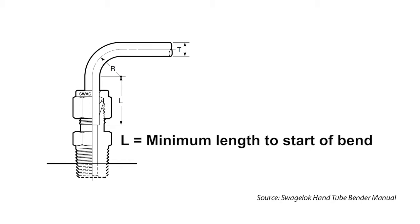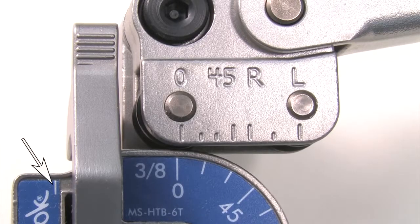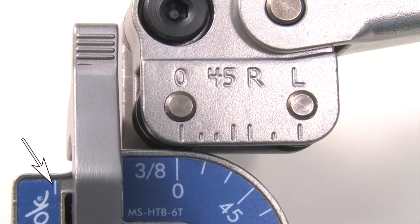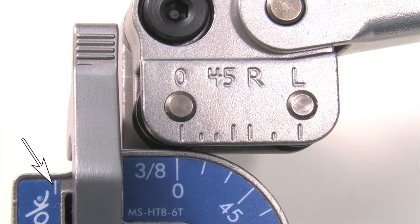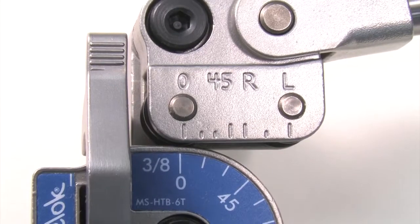Bends that are close to the end of a tube where fittings are installed must have a straight run before the bend to make sure that the tubing touches the bottom of the fitting. This mark is the minimum length needed for 3/8 inch tube. The end of the tube must be to the left of this mark in order for the fitting to seal properly.